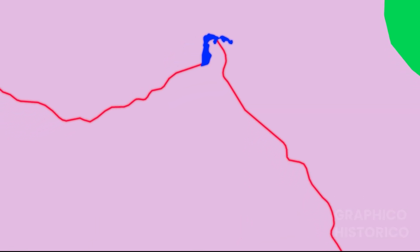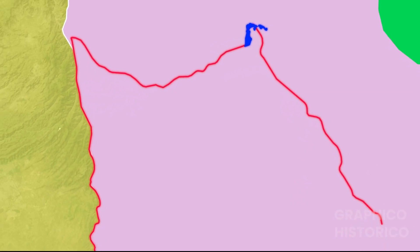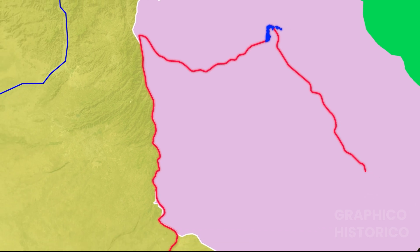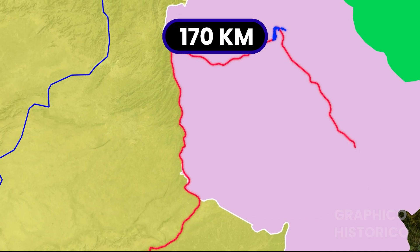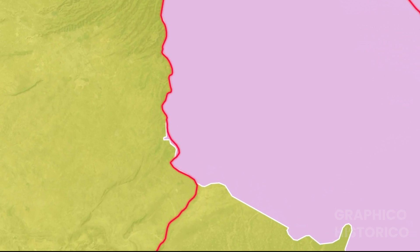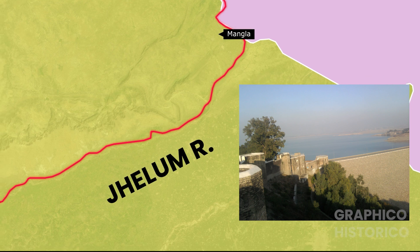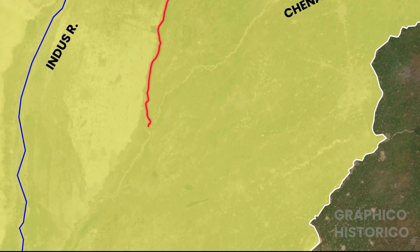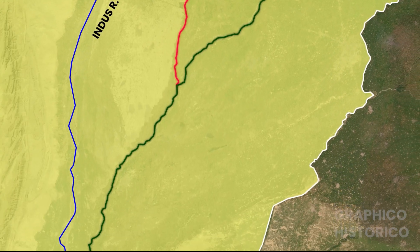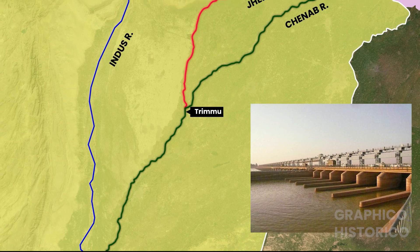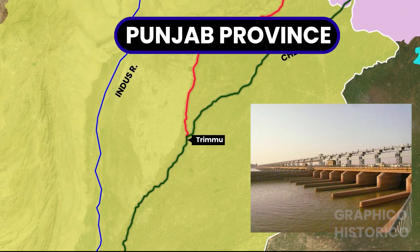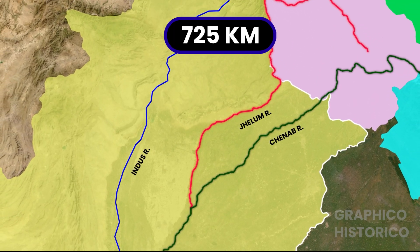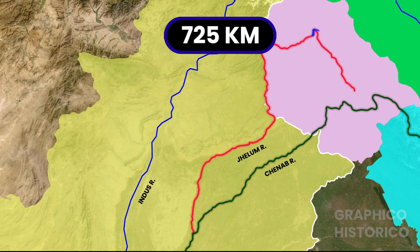Wular Lake, the largest freshwater lake in India, is situated here. After that, the Jhelum river forms the boundary between India and Pakistan for 170 km, and at Mangla it enters Pakistan. In Pakistan, it meets the Chenab river at Trimmu in Punjab province. The total length of the Jhelum river is 725 km.